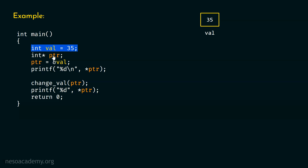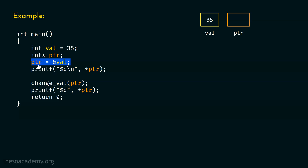After this, we have a pointer ptr, which is a pointer to an integer. Currently, there is nothing inside this pointer. This pointer is ptr, and this is the pictorial representation of pointer ptr. After this, we have the step ptr equal to ampersand val — we are trying to assign the address of this variable to ptr.